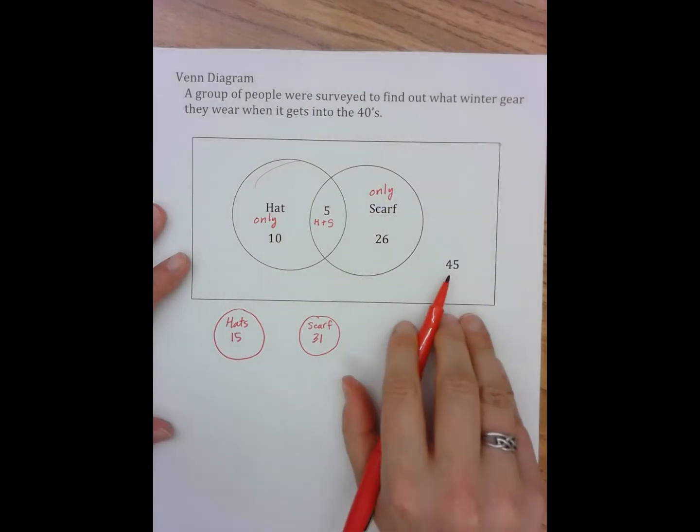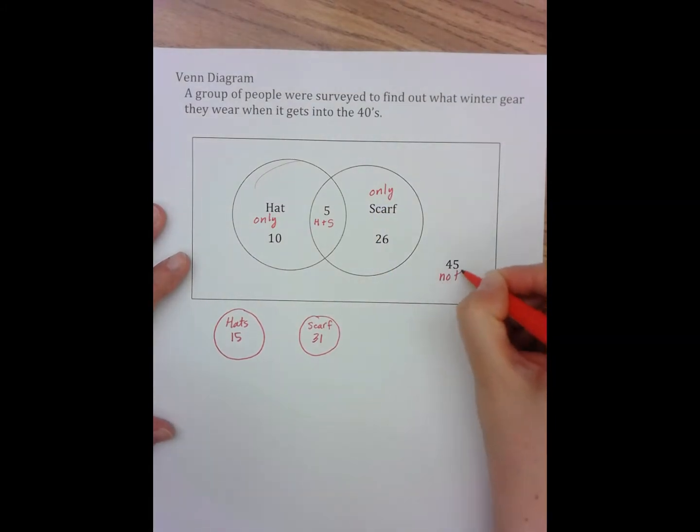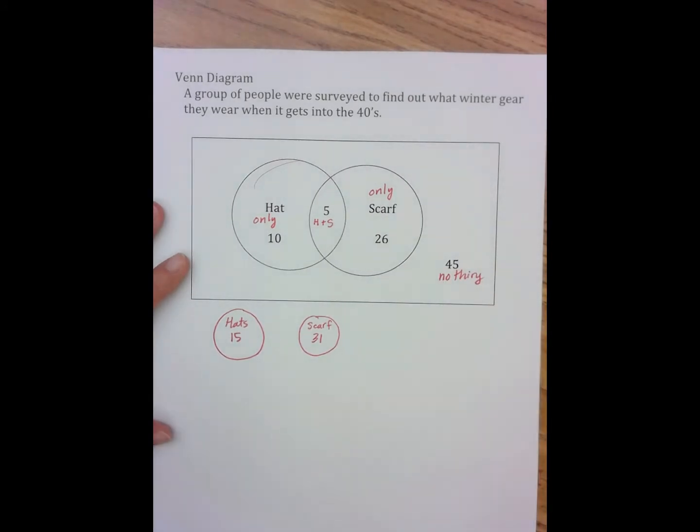And this 45 here means nothing. They didn't wear a hat or a scarf. Some people might find it helpful to make a two-way diagram of this information, and if that's something that you find to be helpful, please, by all means do that.